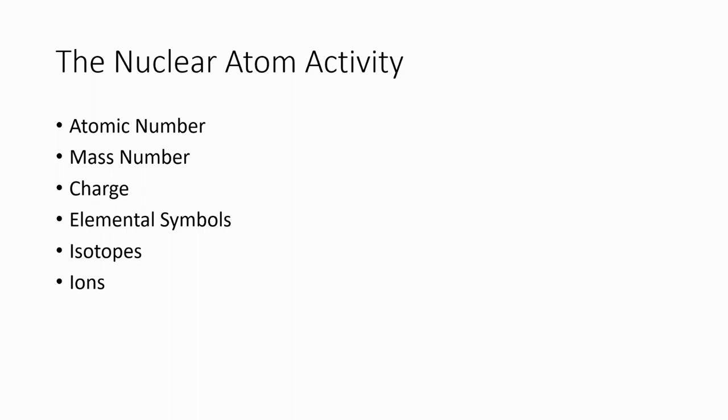All right, welcome back everybody. We're going to talk a little bit today about some of the lessons that we learned from our two pogols that we did recently, one on the nuclear atom and the second on ions, and we're going to talk about how we would go about finding the number of protons, electrons, and neutrons in a particular isotope. Let's start with something simple.